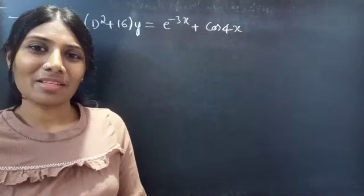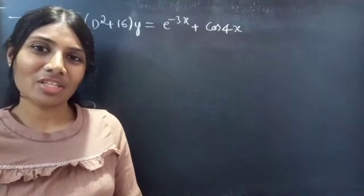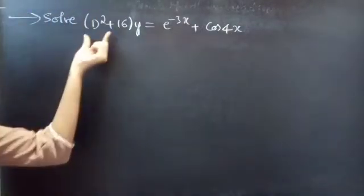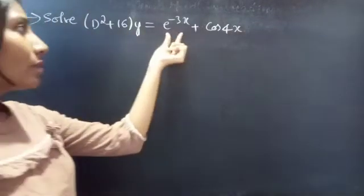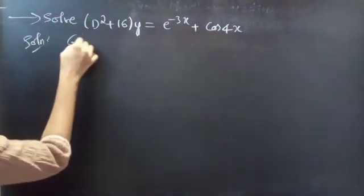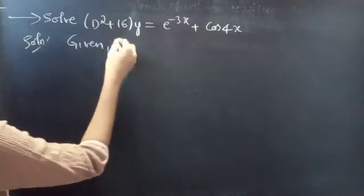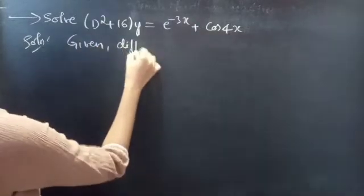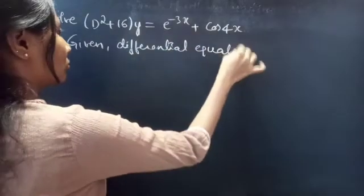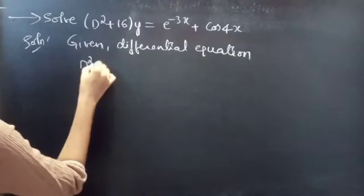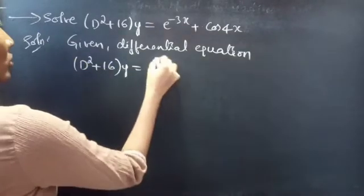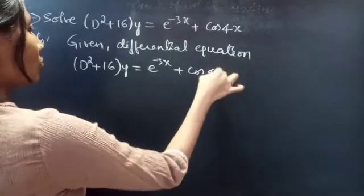Hello everyone, this is Jay Kalbina here. In this video, we are going to solve a differential equation from higher order linear differential equations. Problem: Solve (d² + 16)y = 3e^(−3x) + cos4x. Solution. Given differential equation: (d² + 16)y = 3e^(−3x) + cos4x.